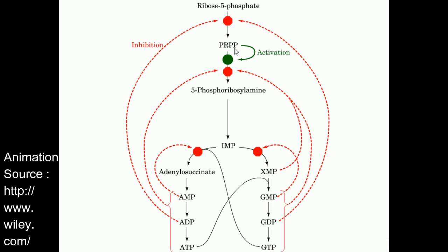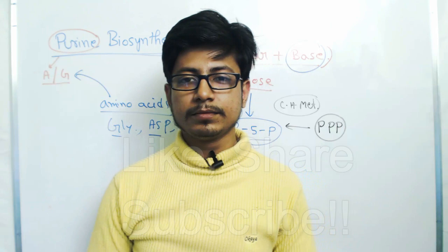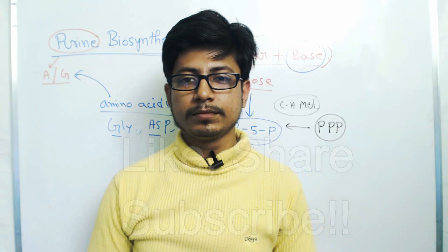This complete pattern of regulation of purine biosynthesis shows only one activation and multiple inhibitions — mostly product inhibition, some feedback inhibition, and some competitive inhibition — as well as coordination between the production of ATP and GTP. That's all about nucleotide metabolism. If you like this video, please hit the like button, share it with your friends, and subscribe to my channel for more videos like this. Thank you.